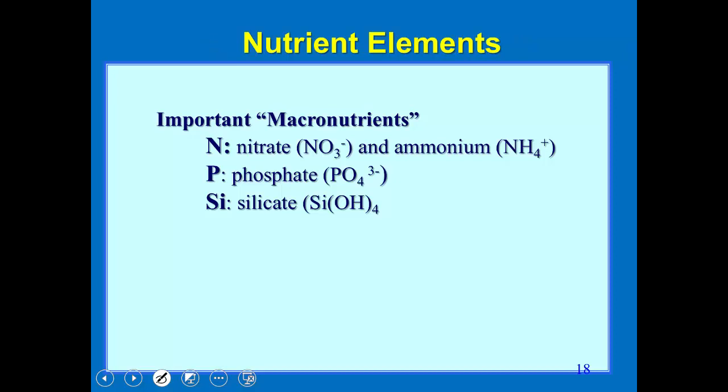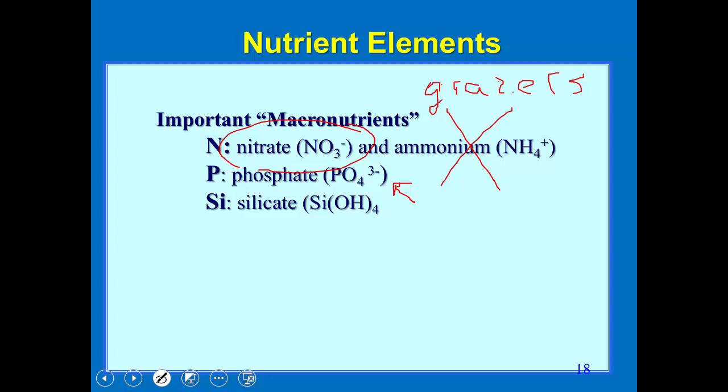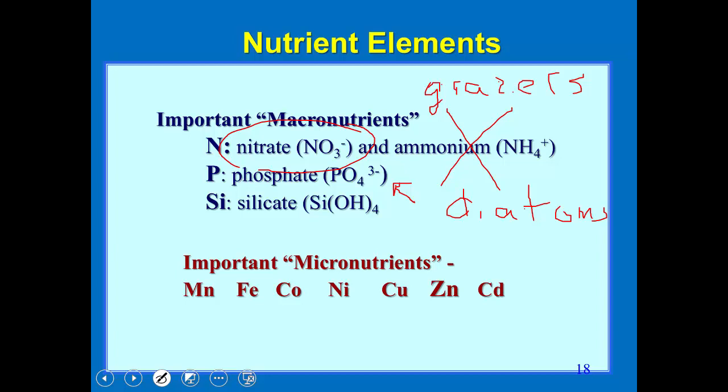Upwelling brings up important macronutrients. The most important is nitrate. Ammonium is not brought up by upwelling — it comes from grazing; the animals provide and excrete ammonium. Upwelling also brings up phosphate and silicate. Not every organism needs silicate — most importantly the diatoms need it. There are also micronutrients — organisms need much less of these, and they include several metals that are used as coenzymes to help enzyme function.